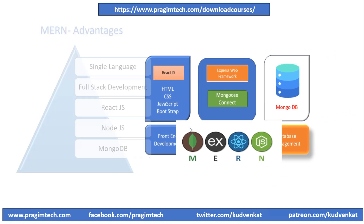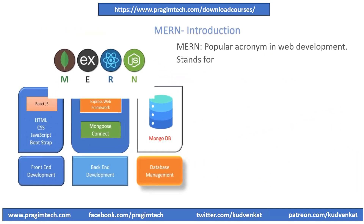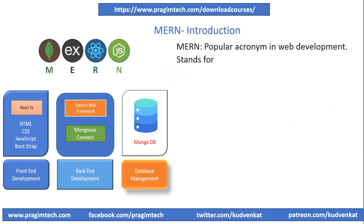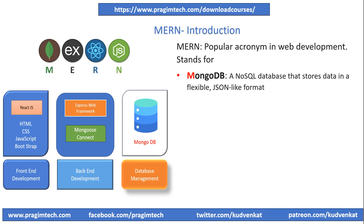MERN is a popular acronym in web development that stands for MongoDB, ExpressJS, ReactJS, and NodeJS. It represents a full-stack JavaScript framework used for building dynamic web applications, where each component in the stack serves a specific purpose.